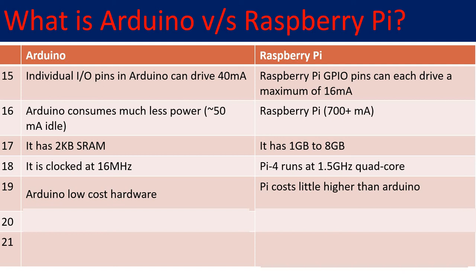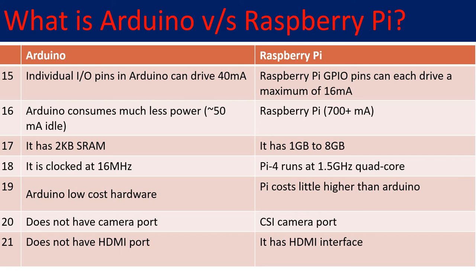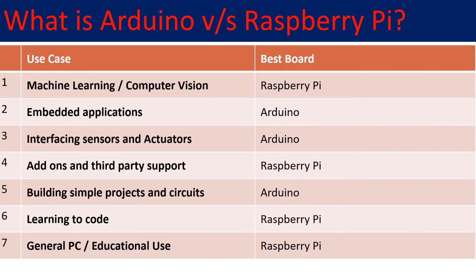Raspberry Pi also has a camera port so you can easily interface a camera to the Raspberry Pi board. Arduino doesn't have an HDMI port, whereas Raspberry Pi 4 has an HDMI interface.